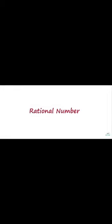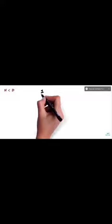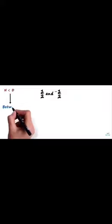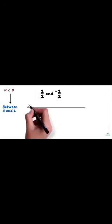One category of plotting rational numbers on the number line is when the numerators are less than the denominators. Let's try to plot 1 by 2 and minus 1 by 2 on the number line. First, we see how we can plot 1 by 2. The numerator 1 is less than the denominator 2. When the numerator is less than the denominator, the positive rational number will be between 0 and 1. So we draw the number line, and 1 by 2 has to lie somewhere between 0 and 1.